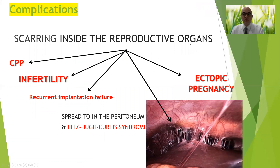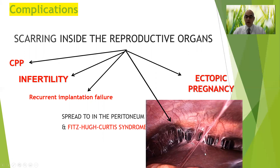The complications of PID are serious: inflammation of the tubes, ovaries, uterus, and peritoneum can lead to chronic pelvic pain, infertility, ectopic pregnancy, recurrent pregnancy loss, and peritoneal adhesions. One common laparoscopic finding in PID patients is perihepatic adhesions between the liver and the anterior abdominal wall — called Fitz-Hugh-Curtis syndrome, described by Dr. Fitz, Dr. Hugh, and Dr. Curtis.